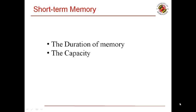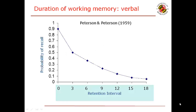To explain storage, we are going to divide it into two parts: the duration of the memory and the capacity. Peterson and Peterson showed that we tend to forget words that have been presented to us just once. Surprisingly, this duration is only 20 to 30 seconds. As you can see in the graph, after almost 18 seconds the probability of recall is very low.